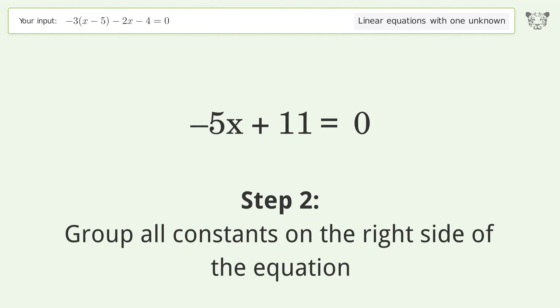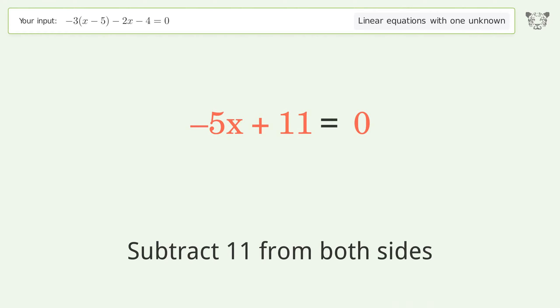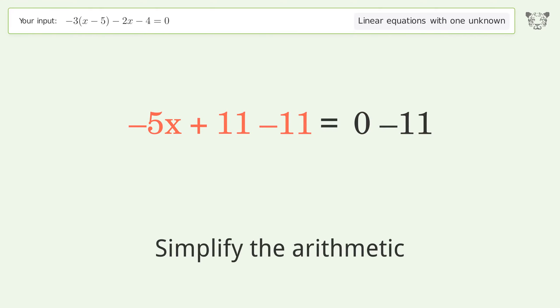Group all constants on the right side of the equation. Subtract 11 from both sides. Simplify the arithmetic.